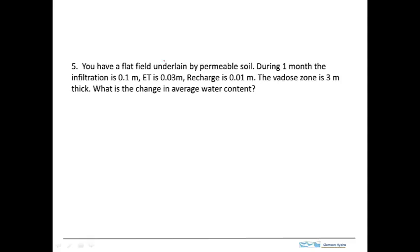Here's another problem. We have a flat field underlain by permeable soil. During one month, we've got a certain amount of infiltration, ET, and recharge, and we want to calculate the average change in water content. Here's the field: this is the ground surface, this is the water table. The control volume would be like this. We've got infiltration coming in, recharge going out, ET going out, and then we've got some storage here, 3 meters thick.